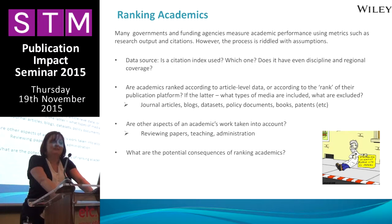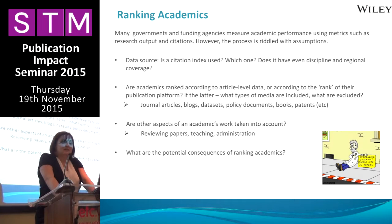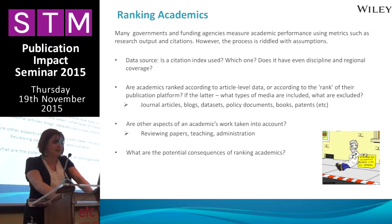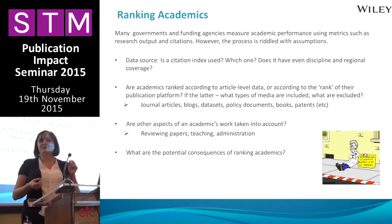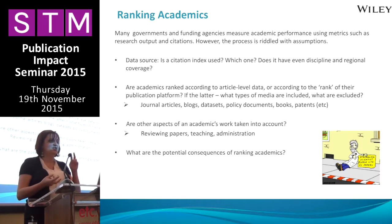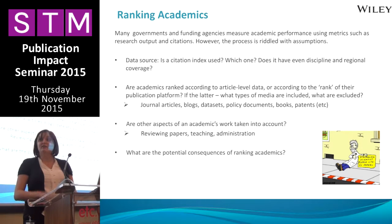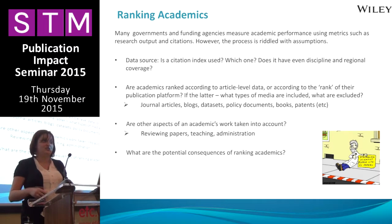Consider whether a citation index has even discipline and regional coverage — it's not always the case. Are academics being ranked according to article-level data, or according to the rank of their publication platform, such as the journal? And what types of media are being included in the rankings? Are they being looked at for journal articles only, or are they being assessed according to book publications, their influence on policy documents, their data sets, their blogs, their patents? There are a whole range of publication media that don't get counted in traditional metrics.